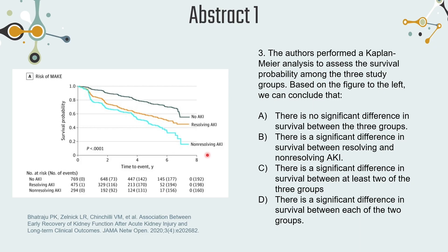A significant p-value for the Kaplan-Meier log-rank test with three groups does not tell you which two groups differ — you need post hoc analysis for that. The null hypothesis of this test is that there is no significant difference in survival between any of the three groups. When you get a significant p-value, you reject the null, meaning at least two of the three groups have a significant difference. So option C — 'at least two of the three groups' — is the correct answer.